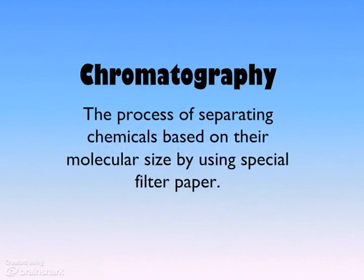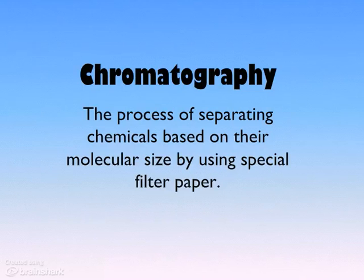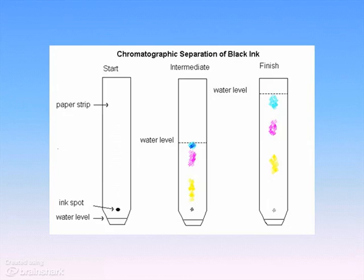Chromatography is actually a whole classification or group of different techniques of analysis that all end up separating chemicals based on their molecular size. We're going to be looking at paper chromatography, which does this by taking a solution and passing it through paper — we use filter paper. Different molecules move through the filter paper with a solvent at different speeds, and that allows us to separate them by size.